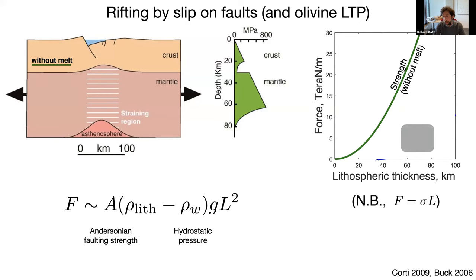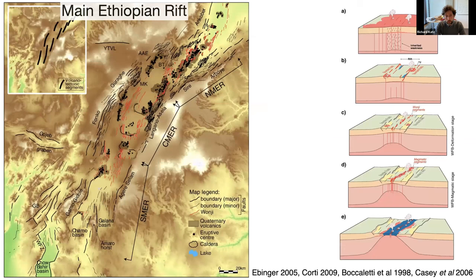The force as a function of lithospheric thickness L is quadratic. For typical lithospheric thickness between 60 and 80 kilometers, we would need upwards of 15 teranewtons per meter. So if this is the mechanism for rifting, subduction forces could get us there, but forces from other mechanisms such as dynamic topography uplift or basal traction could not.